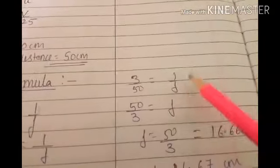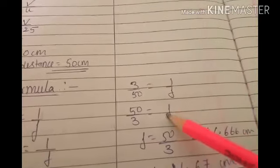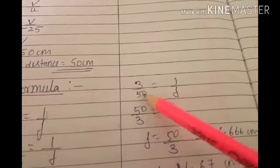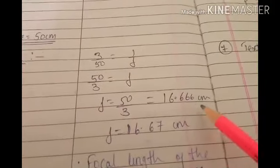Directly add the numerators: 1 plus 2 upon 50 equals 1/F. So 3/50 = 1/F. To find F, take reciprocal: F = 50/3, which gives 16.666 cm.